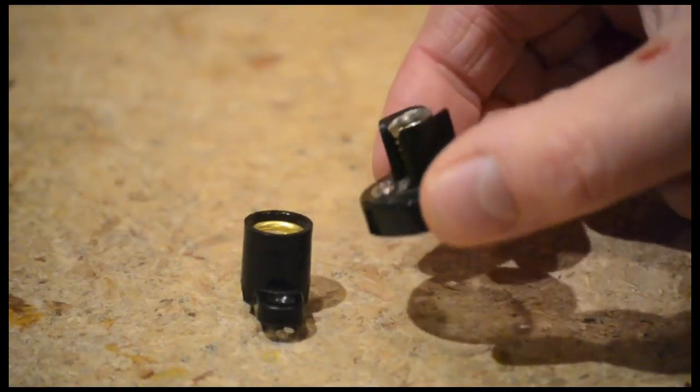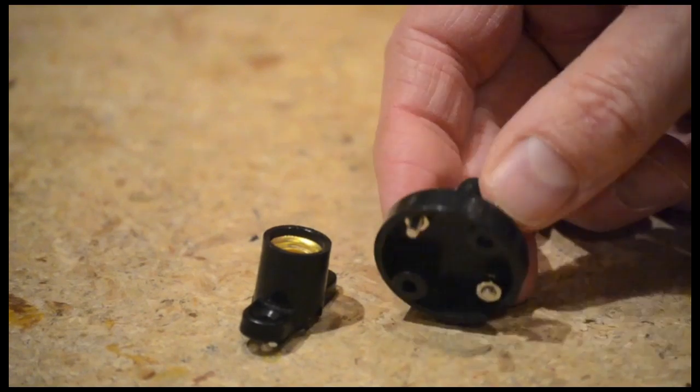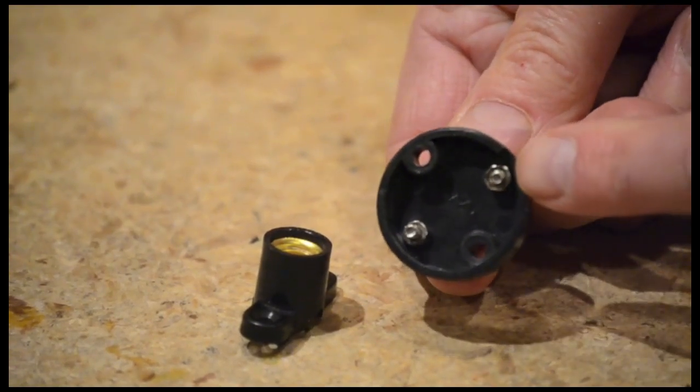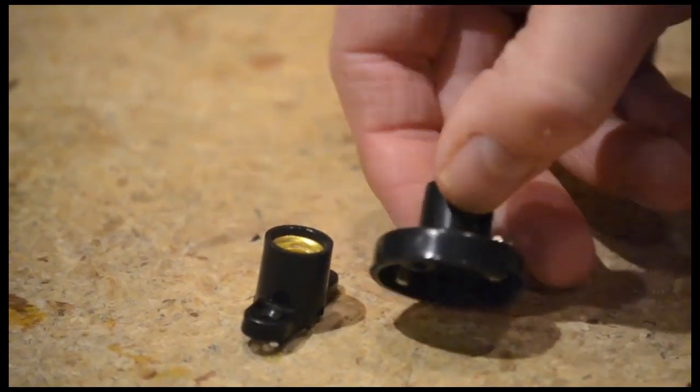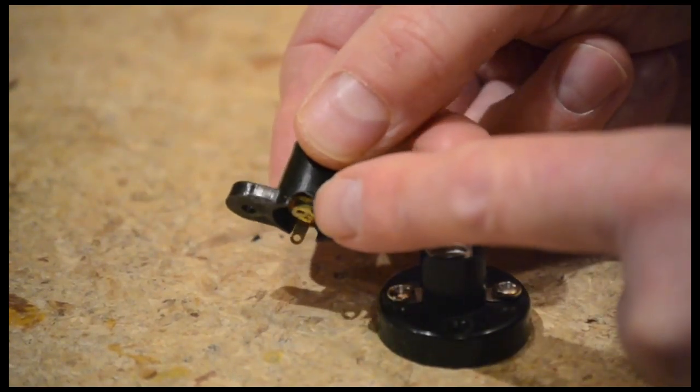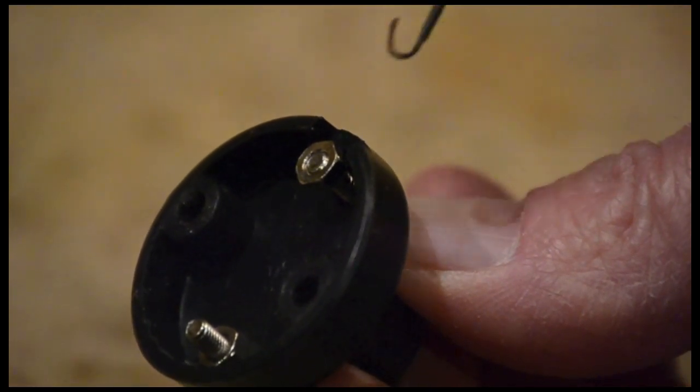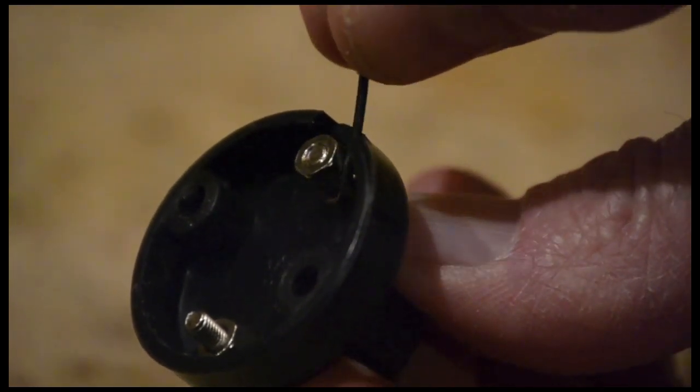Use an E10 lamp base for your light bulb. Some lamp bases come with screw terminals and others with soldering terminals. If you have screw terminals, loop one end of each wire, then slip each looped end under a nut and tighten.